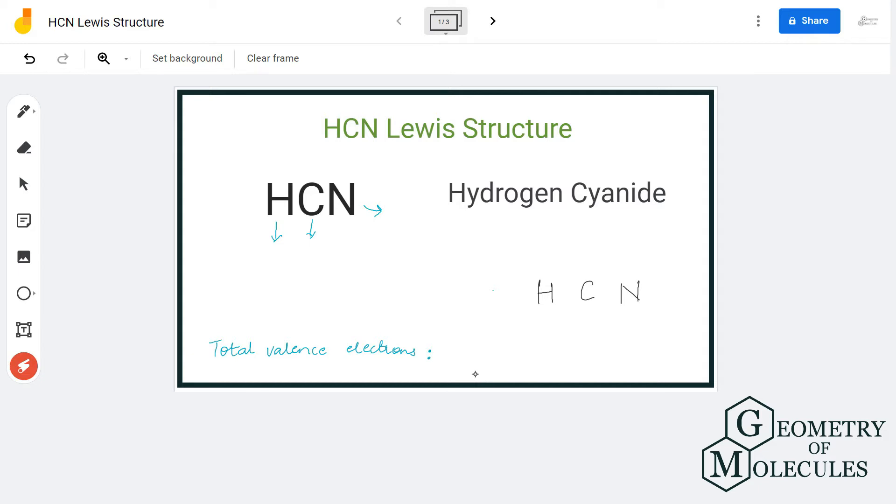So HCN is a chemical formula for hydrogen cyanide and it is made of three atoms: hydrogen, nitrogen, and carbon. To understand the Lewis structure of any molecule, it is essential to know the total number of valence electrons in the molecule.